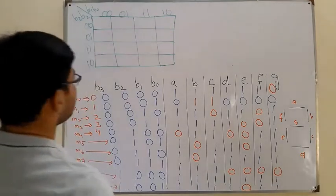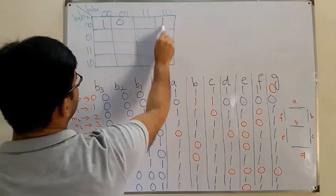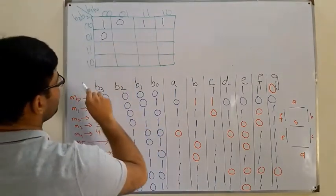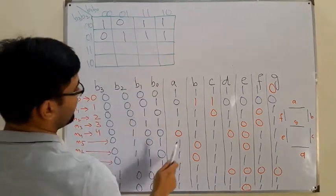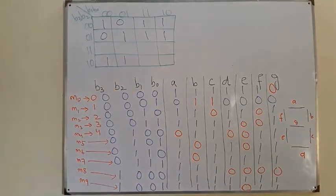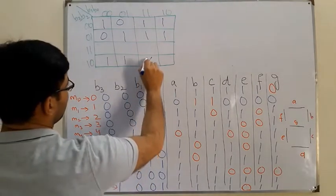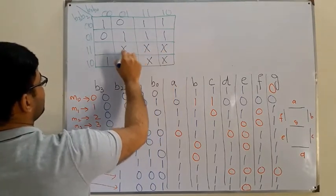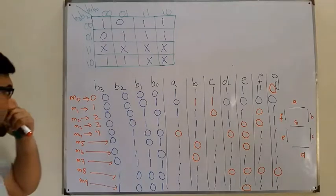Now we fill the K-map for A. The values are: 1, 0, 1, 1, then 0, and then the rest are 1s — so 1, 1, 1. That accounts for the valid minterms. The remaining cells are don't cares, and since we have more 1s, we treat the don't cares as 1s.